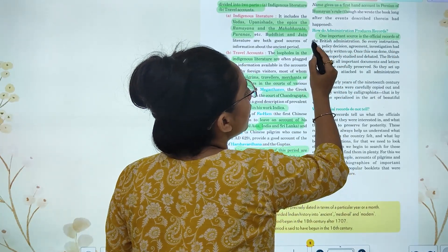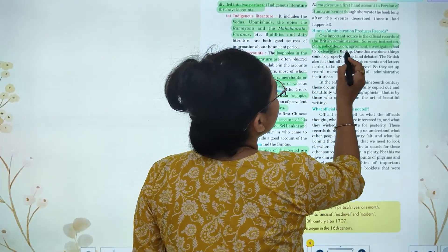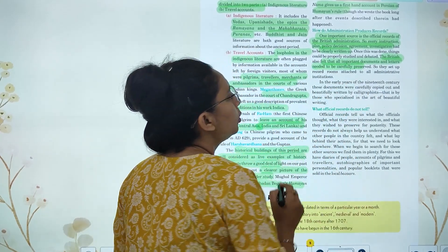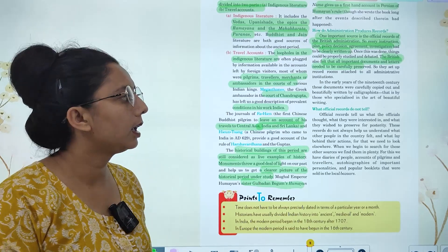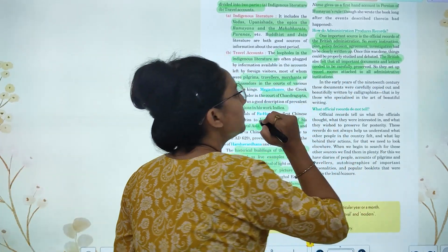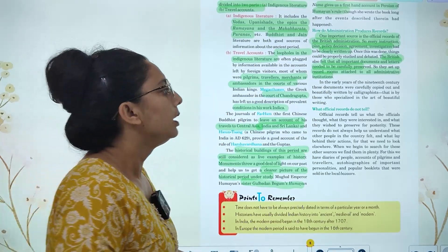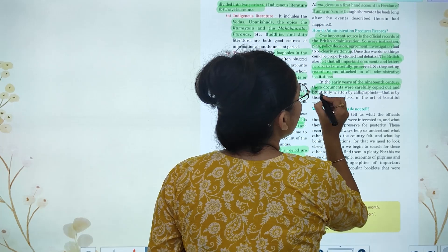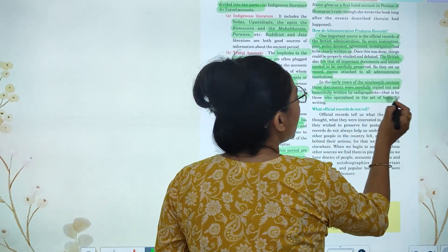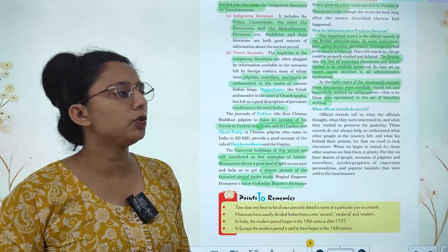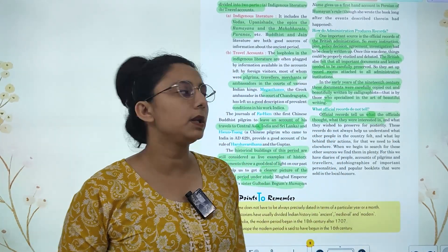One important source is the official records of the British administration. Every instruction, plan, policy decision, agreement, and investigation had to be clearly written down. The British felt that all important documents and letters needed to be carefully preserved. So they set up record rooms attached to all administrative institutions. In the early years of the 19th century, these documents were carefully copied out and beautifully written by calligraphists who specialized in the art of beautiful handwriting.